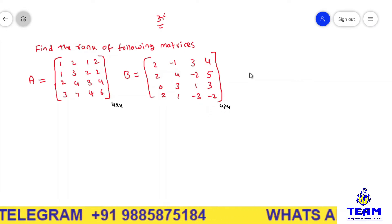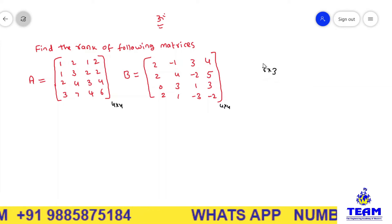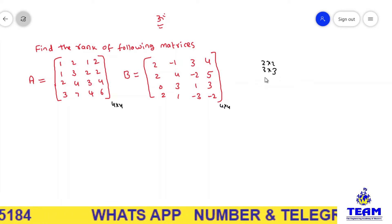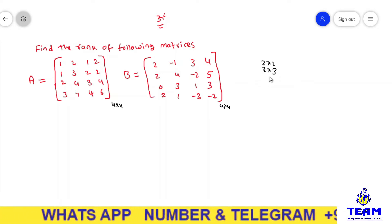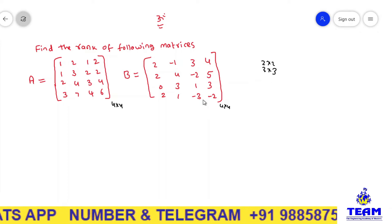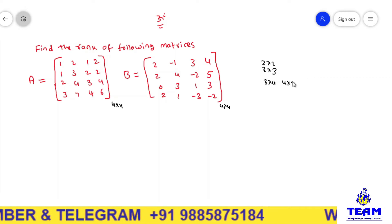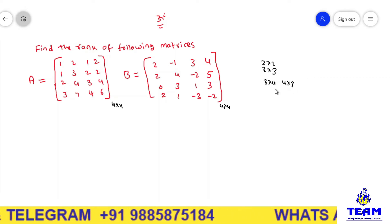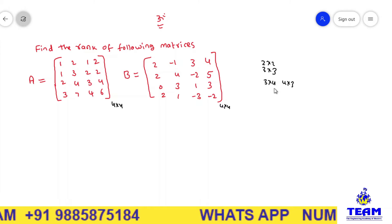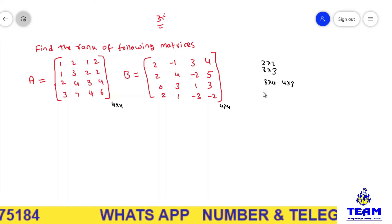In general, if it is a 3 by 3 matrix or 2 by 2 or 1 by 1 — whatever it may be — if it is a square matrix up to 3 by 3, we use the determinant method. If it is more than 3 by 3, like 3 by 4, 4 by 3, 4 by 4, 4 by 5 — higher order matrices — then we apply echelon form.